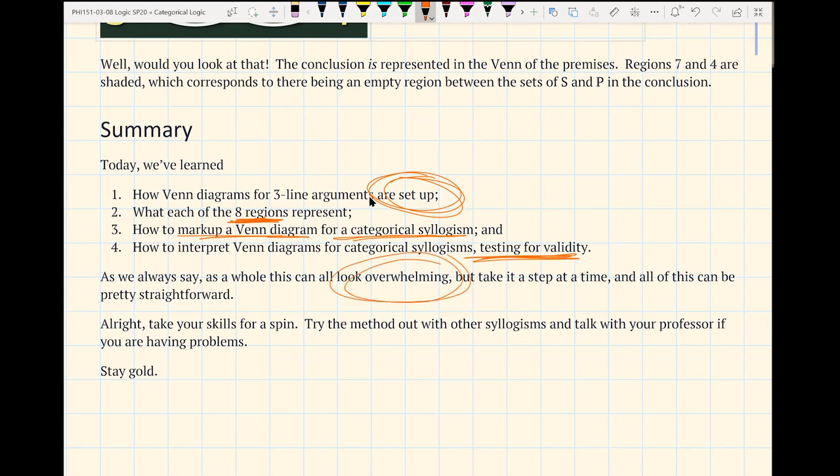So hopefully in this quick discussion, you can see how to set up arguments. We did that quickly, but we did do that. We know what each of the eight regions represent. We can mark up a Venn diagram for categorical syllogism. And then we can compare diagrams to test for validity. But I do want to say it is overwhelming all at once. But like a lot of stuff in this phase of the class, if we lay out our kind of instructions and go through them one step at a time, each individual step is straightforward, even though when taken as a whole all at once, it can seem pretty complicated.